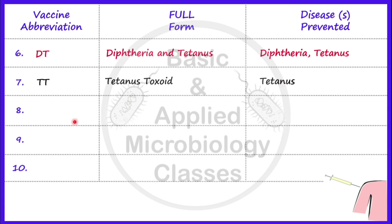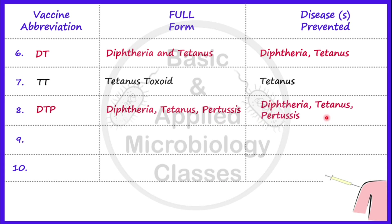Now let's talk about the next vaccine, that is DTP. DTP stands for Diphtheria, Tetanus, and Pertussis. As its name indicates, it is used to prevent diphtheria, caused by Corynebacterium diphtheriae; tetanus, caused by Clostridium tetani; and pertussis, caused by Bordetella pertussis. Pertussis is also known as whooping cough.